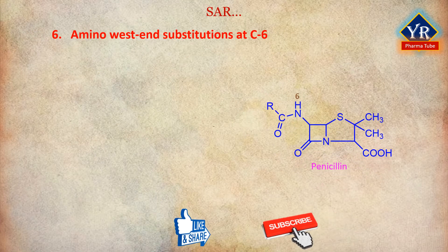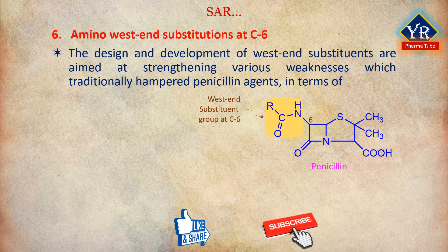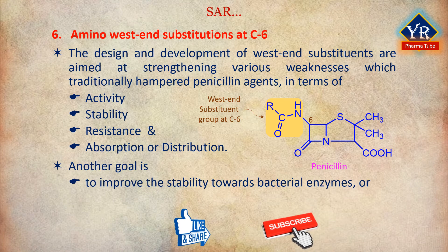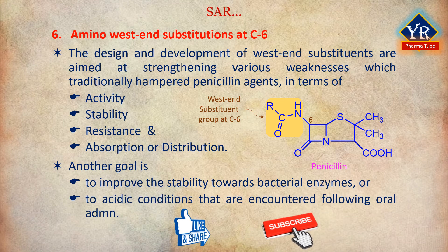Number 6: Acyl side-chain substitutions at C6. Most marketed penicillins differ only in the structure of the side-chain substituent. These can be segregated according to the type of side-chain. The design and development of the side-chain substituents are aimed at strengthening various weaknesses which have traditionally hampered penicillin agents in terms of activity, stability, resistance, and absorption or distribution. Another goal has been to incorporate side-chains that impart improved stability towards bacterial enzymes or to acidic conditions encountered following oral administration. In recent years, the focus has been upon designing new penicillins that are active against troublesome gram-negative pathogens such as Pseudomonas aeruginosa, or gram-positive organisms that are now frequently resistant to earlier agents.